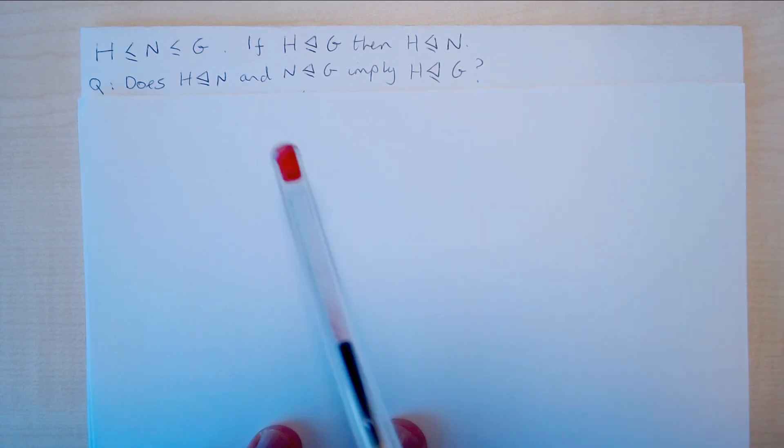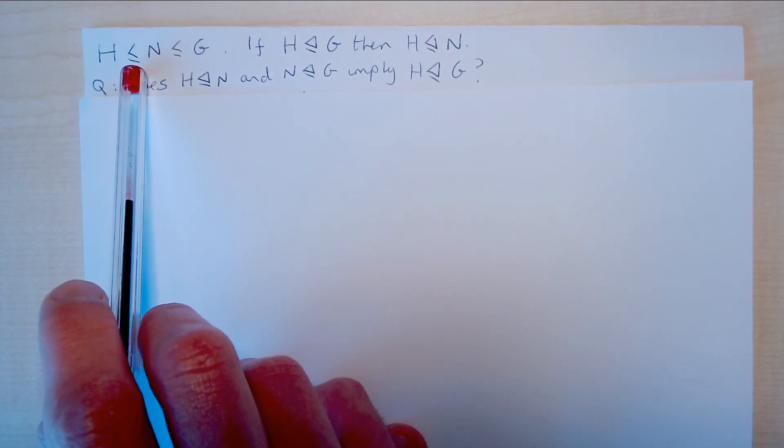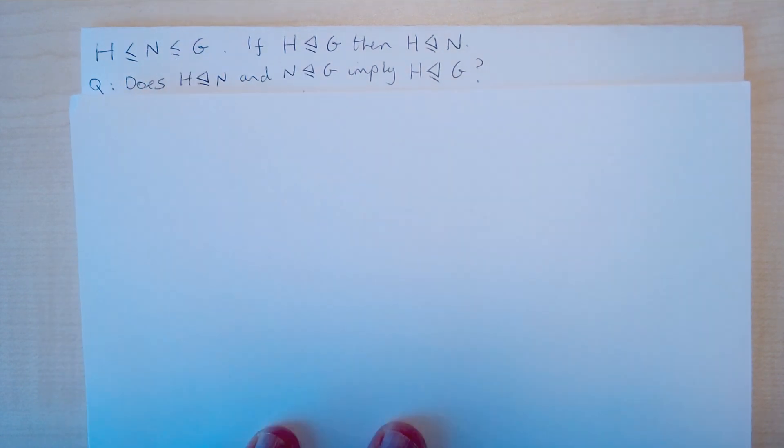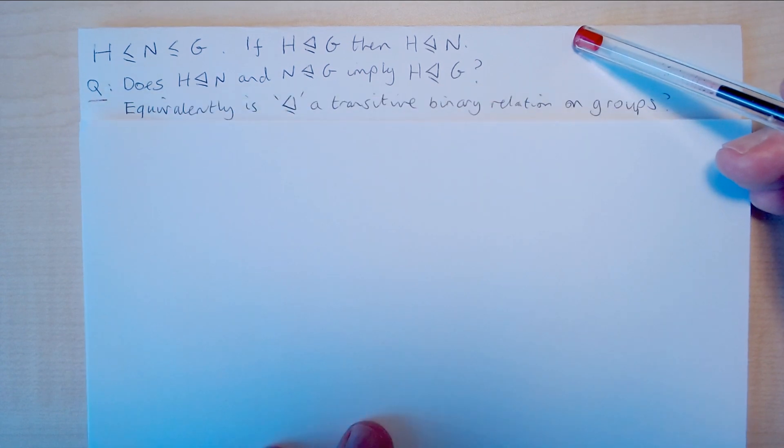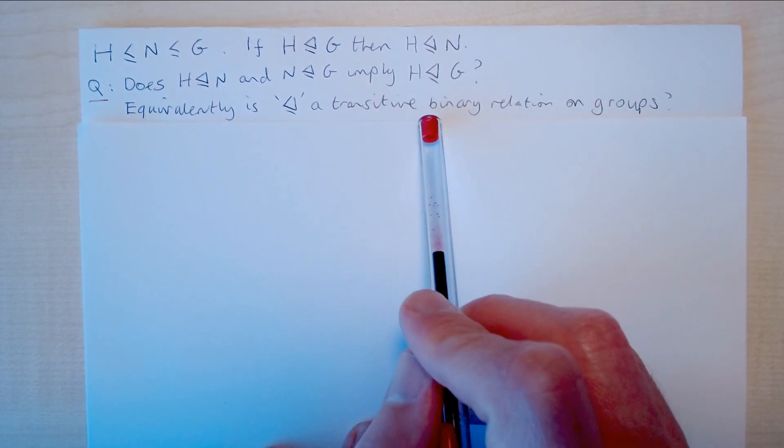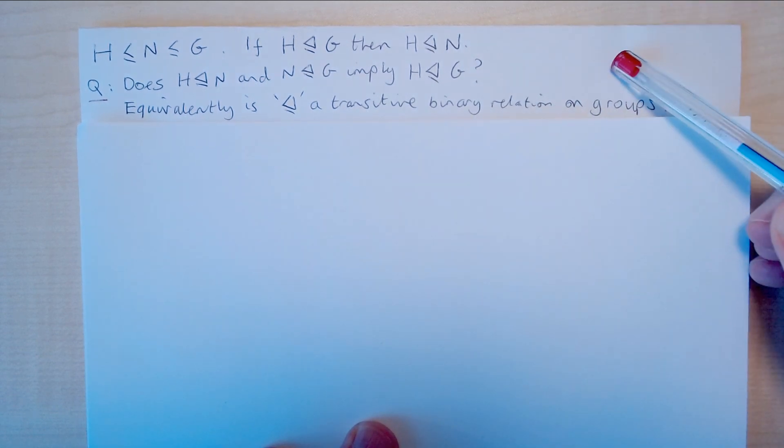But now let's consider the following question. If H is a normal subgroup of N and N is a normal subgroup of G, does this imply that H is a normal subgroup of G? In other words, is this property of being a normal subgroup a transitive binary relation on the class of groups?